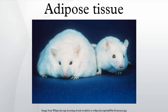Visceral fat or abdominal fat is located inside the abdominal cavity, packed between the organs. Visceral fat is different from subcutaneous fat underneath the skin and intramuscular fat interspersed in skeletal muscles. Fat in the lower body, as in thighs and buttocks, is subcutaneous and is not consistently spaced tissue, whereas fat in the abdomen is mostly visceral and semi-fluid. Visceral fat is composed of several adipose depots including mesenteric, epididymal white adipose tissue, and perirenal depots. An excess of visceral fat is known as central obesity or belly fat, in which the abdomen protrudes excessively. Excess visceral fat is also linked to type 2 diabetes, insulin resistance, inflammatory diseases, and other obesity-related diseases.